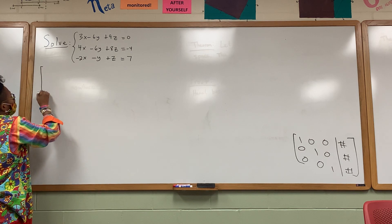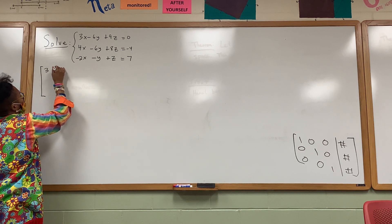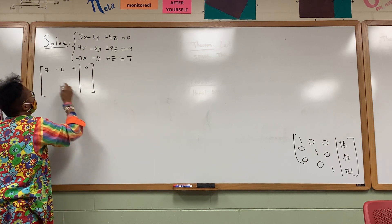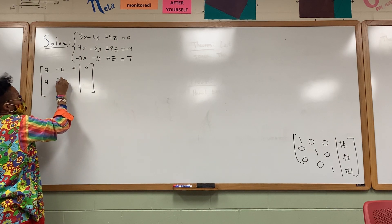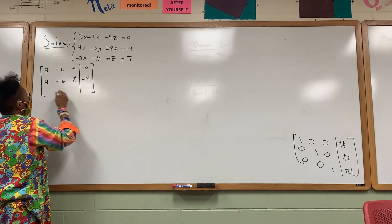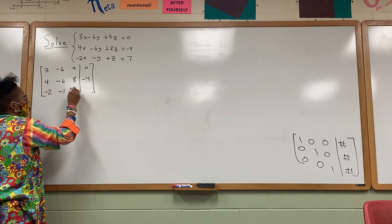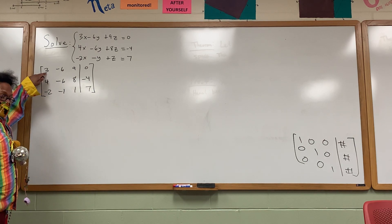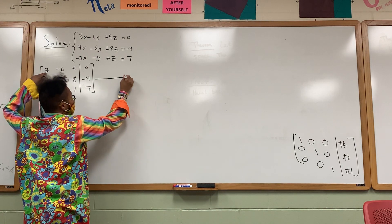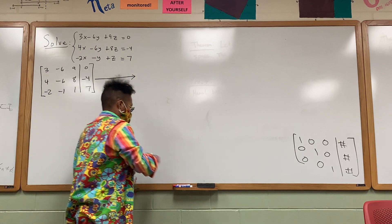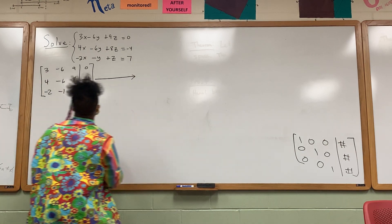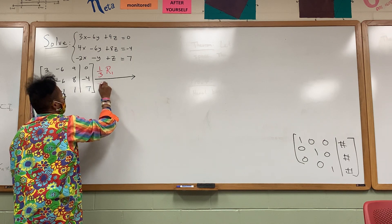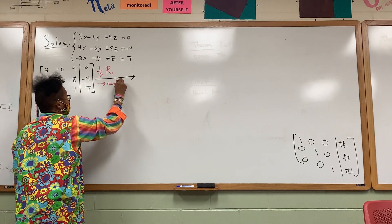The first matrix is the following: three, negative six, positive nine, zero; four, negative six, positive eight, negative four; negative two, negative one, one, seven. So we want to make that three into a one. To do that, we take the reciprocal of three — so one-third times row one to get a new row one.